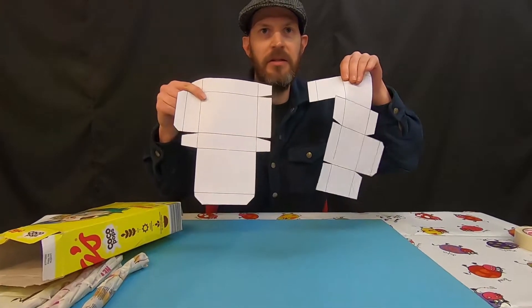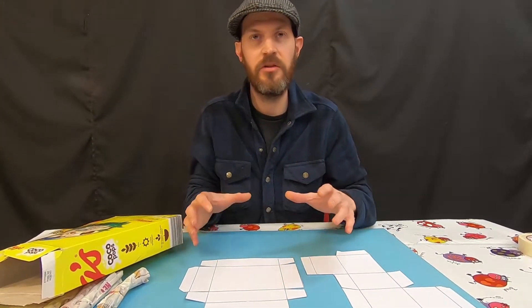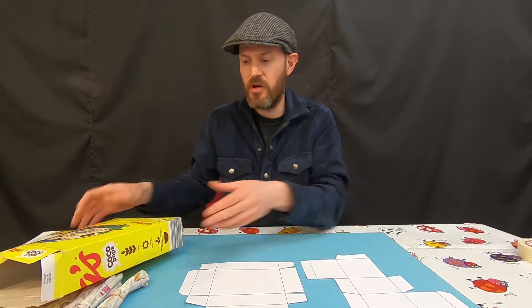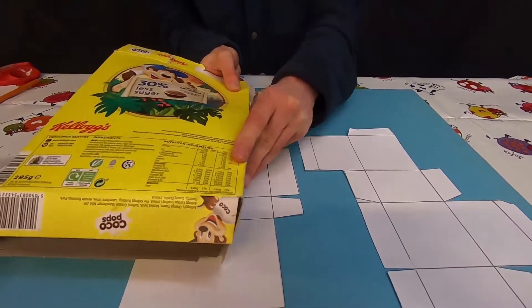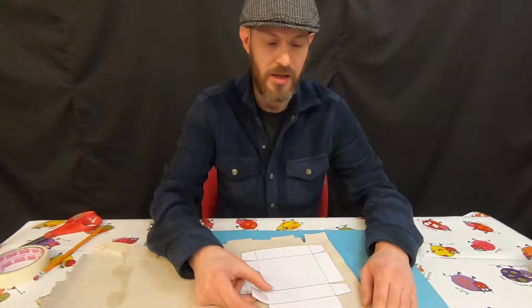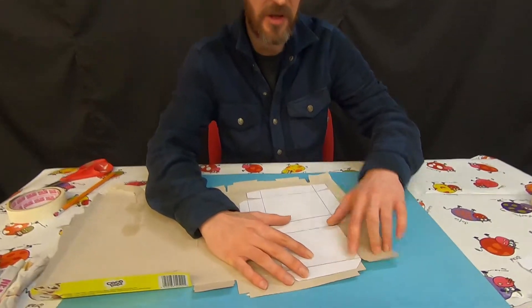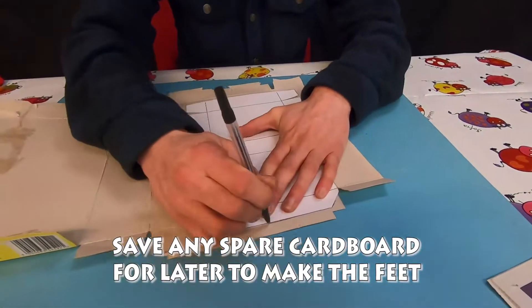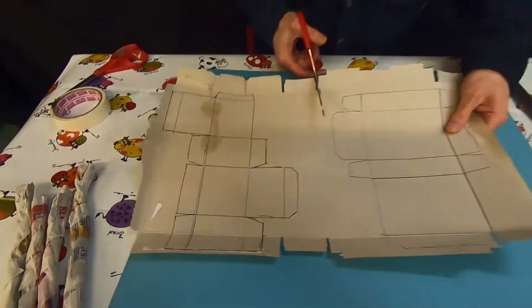So you've got your two templates cut out for the head and the body, and then you want to find some cardboard around the house. I'm using a cereal box. Get your template, put it inside the cardboard box and then just draw around it. Now I'm going to cut them out.